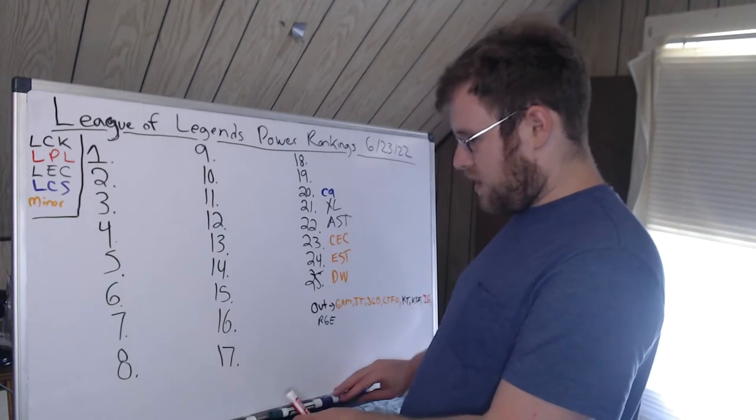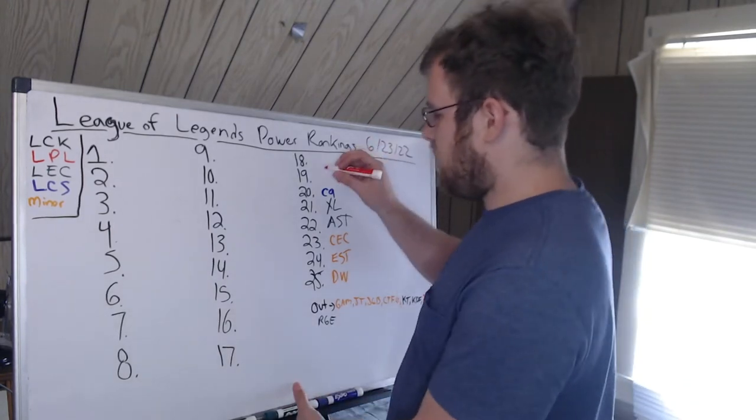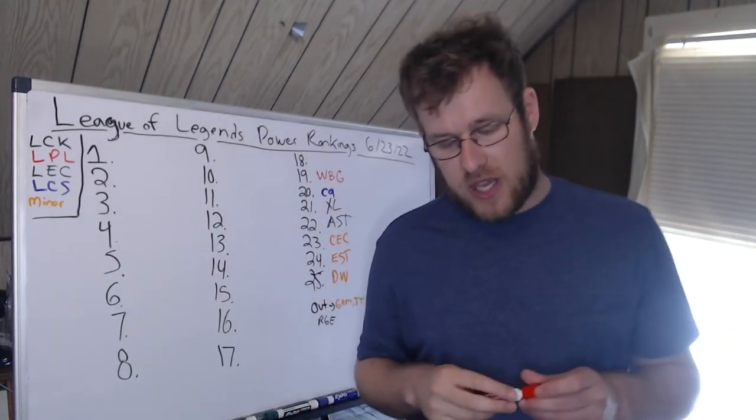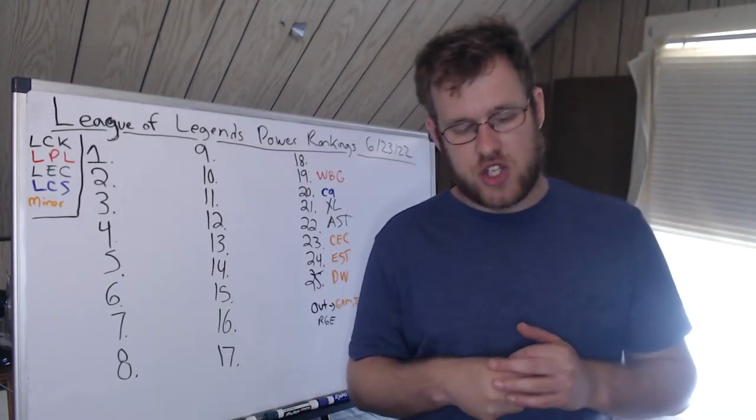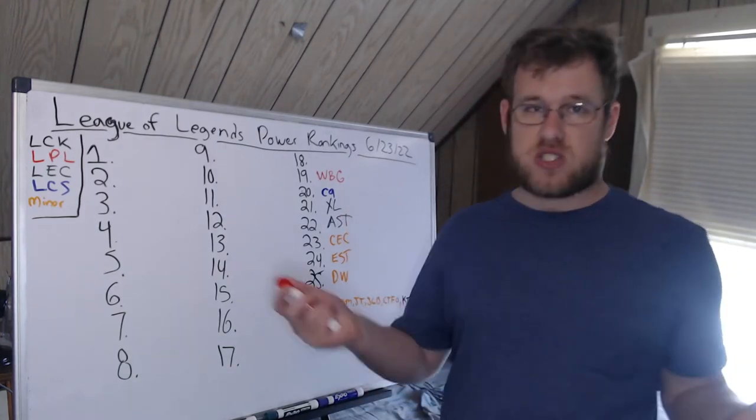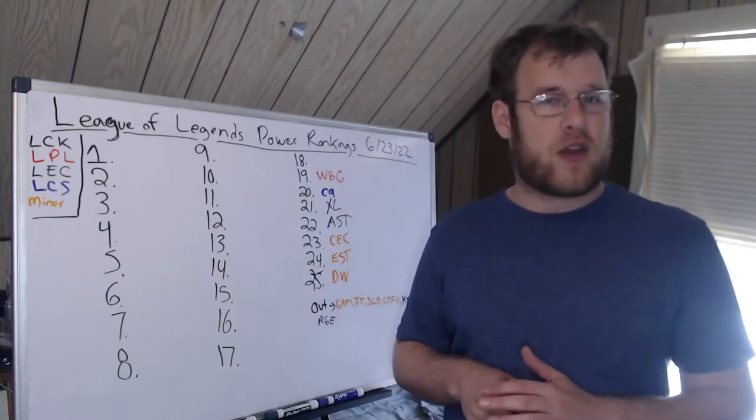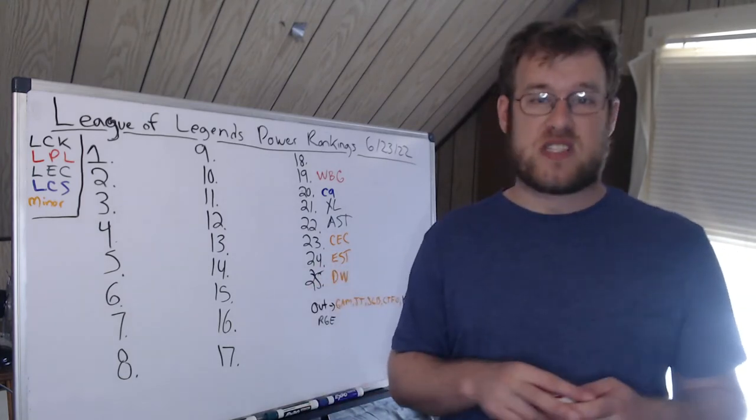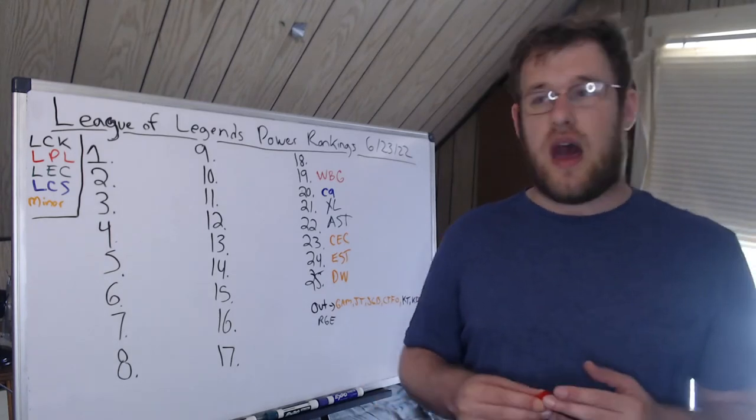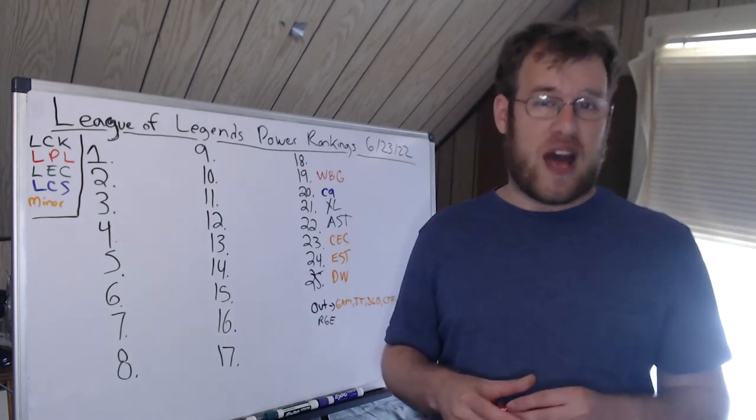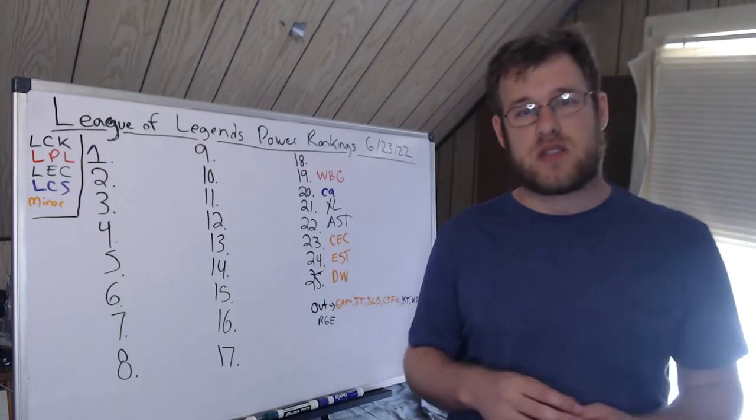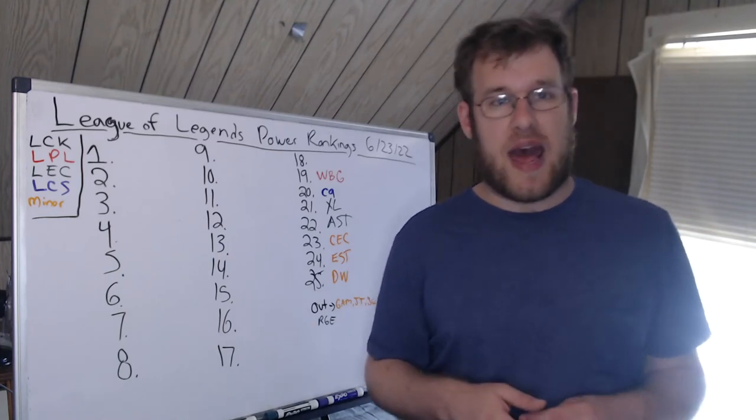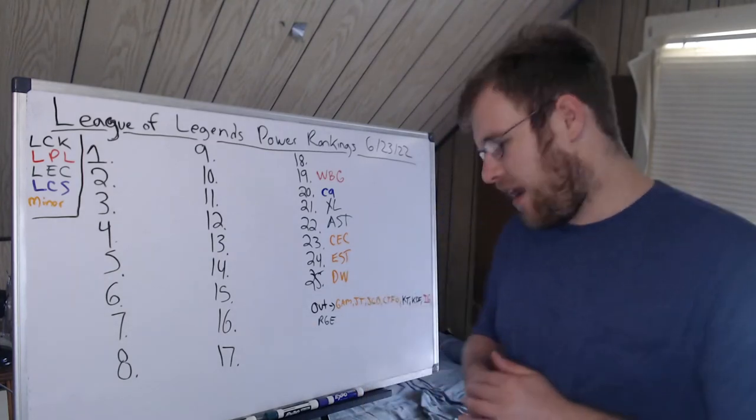19th, we have WBG. WBG continues to cause us issues. Last week they beat Team WE, lost to RNG, sitting at 2-2. They dropped two in my rankings—we're 17th last week. WBG can be the best team in the world at times and also like not even worthy of being on this list at times. It all depends on if TheShy wants to int, if Angel wants to come out and perform.